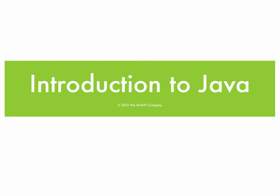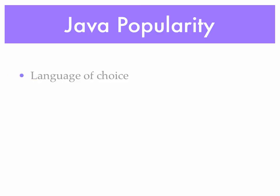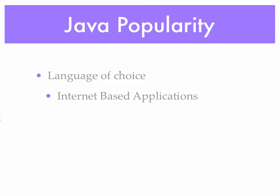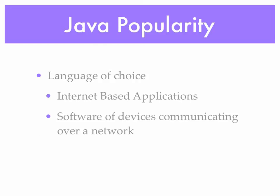Hi, this is Professor Brown-Sederberg, and we're going to introduce Java. Java is a very popular programming language. It's really the language of choice today for Internet-based applications and for software used in devices that communicate over a network. If you'd like to look at the popularity of Java today relative to other languages, I suggest you go to the Tiobe site, which ranks programming languages based on the number of lines of code written. Java has been consistently in the number one or number two spot for quite a few years.